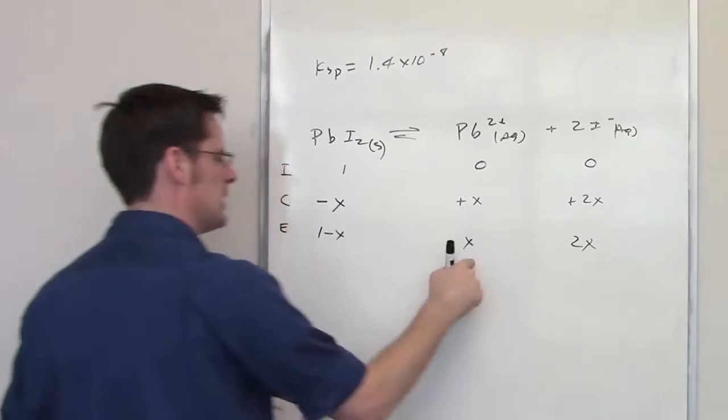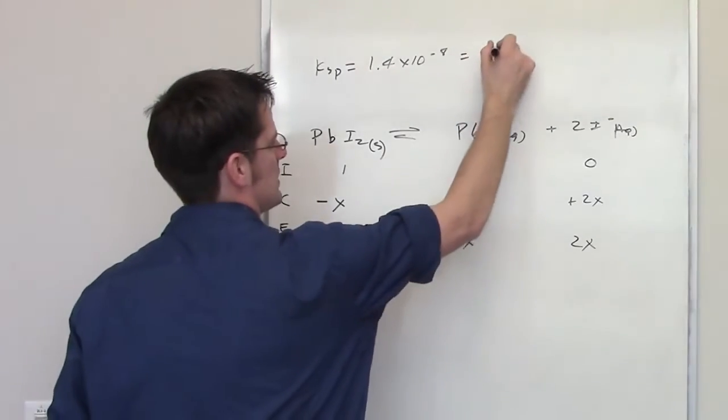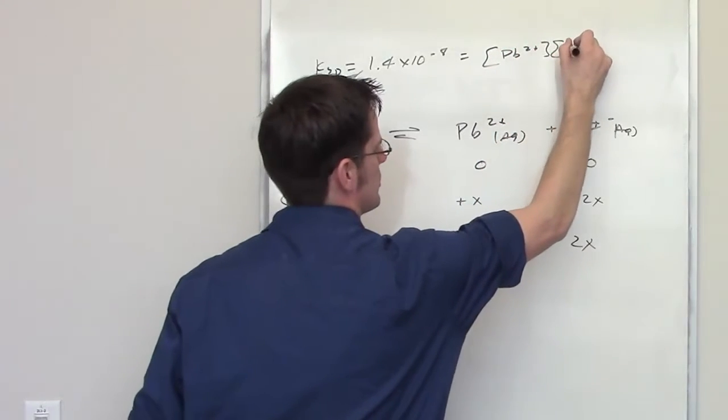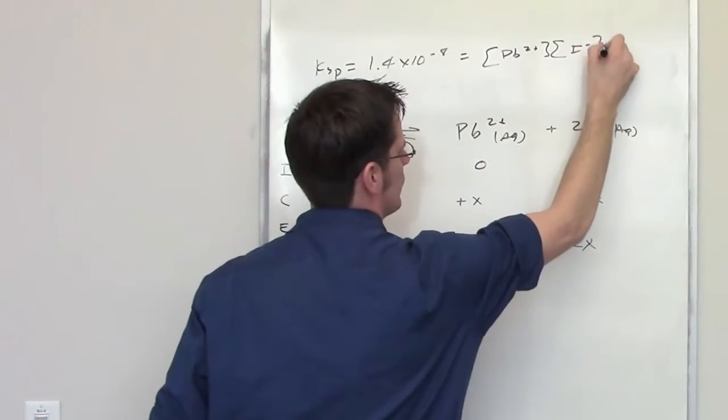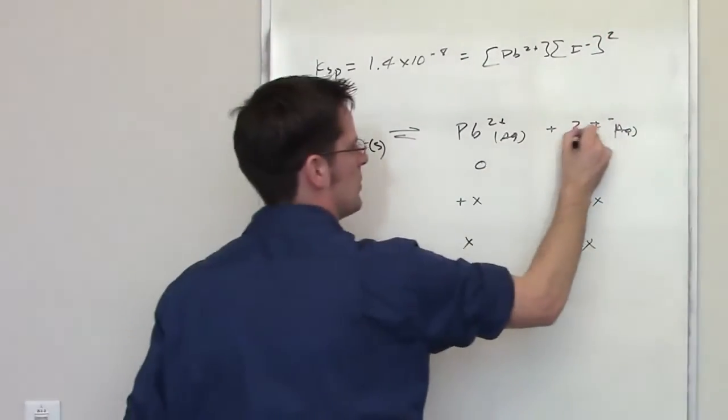These are my individual equilibrium concentrations for each of these species. The Ksp equilibrium constant is equal to the concentration of lead 2+ multiplied by the concentration of I- squared, because there's 2 in front of this iodine.